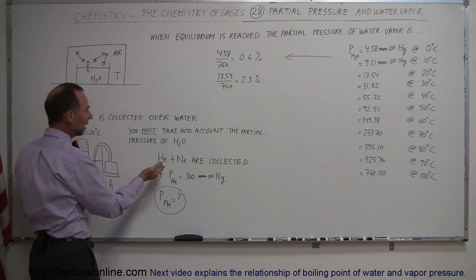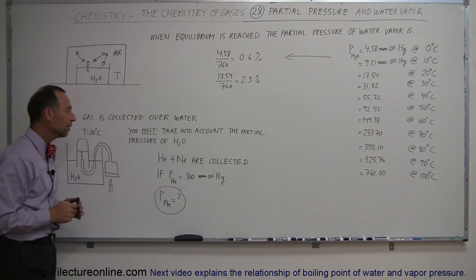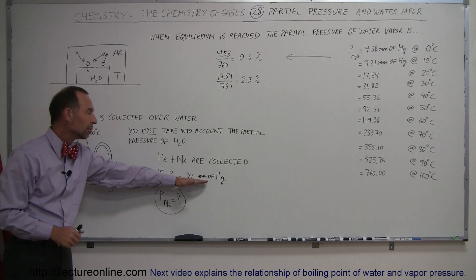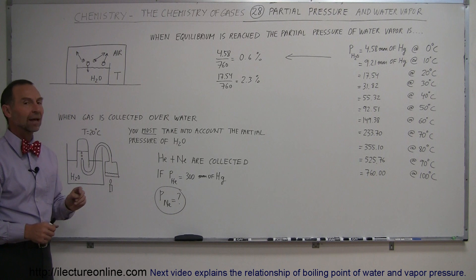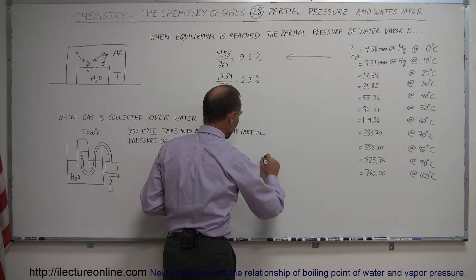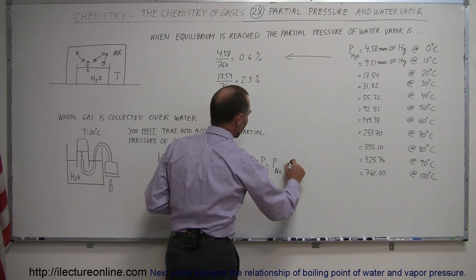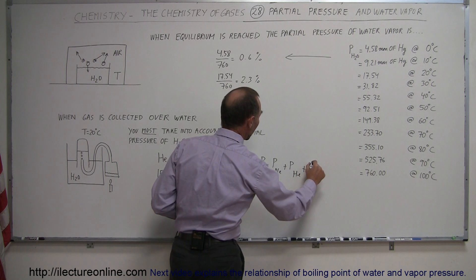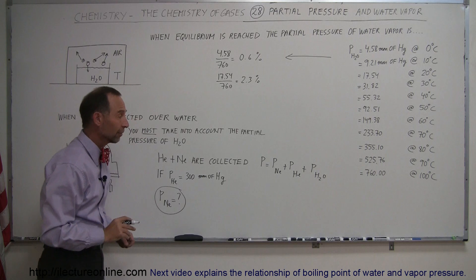So let's say we're doing some collection and we're collecting helium and neon gas in this particular container. Let's say that we know that the partial pressure of helium is 300 millimeters of mercury. Then what would be the partial pressure of neon gas? The way we do that is that the total pressure is equal to the pressure due to the neon gas plus the pressure due to the helium gas plus the partial pressure of the water vapor. We have to take it all into account.